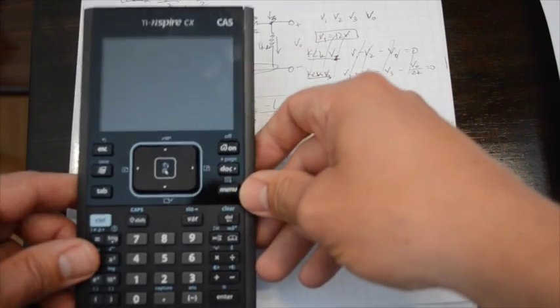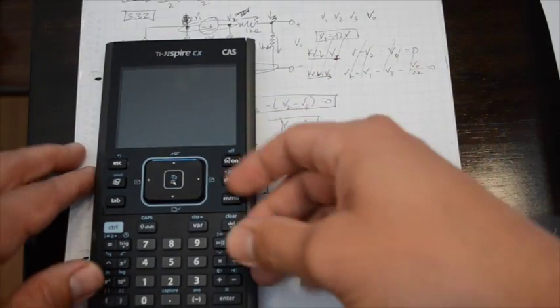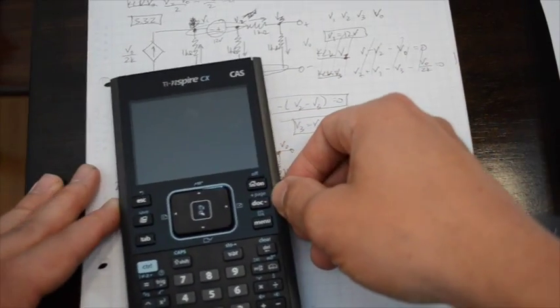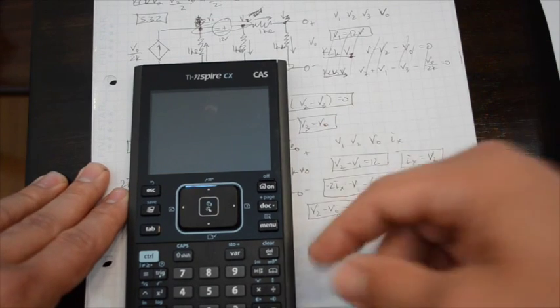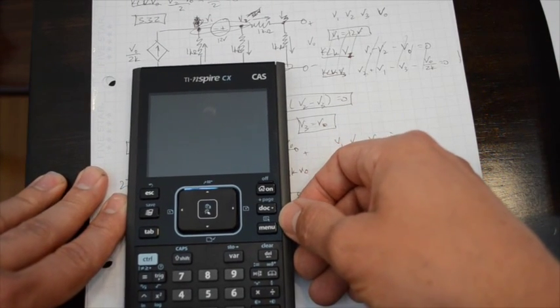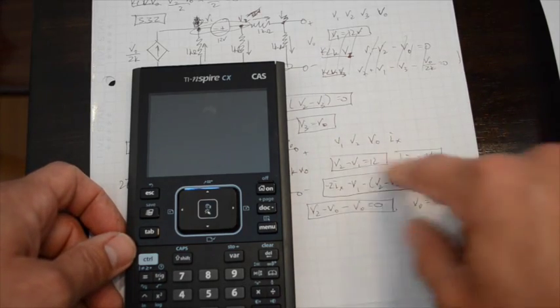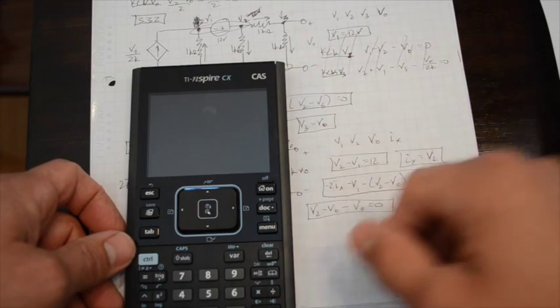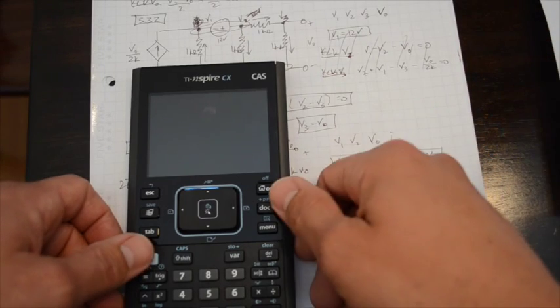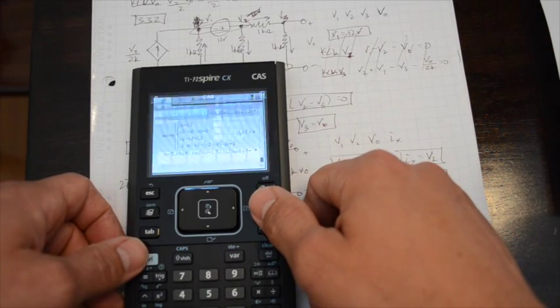Once you have your equations set up, that's actually the hard part when using this calculator. Putting in all the variables is very simple with this calculator. You do not have to set up a matrix or a system of equations or anything like that. I guess technically this is a system of equations, but you don't have to zero out any of the values or put them in order or anything like that, like you would if you were using a matrix.